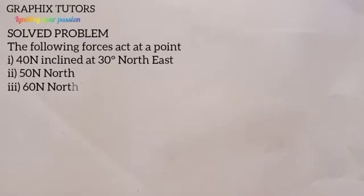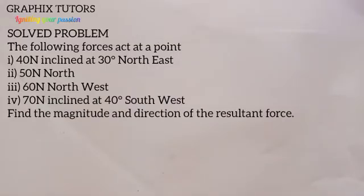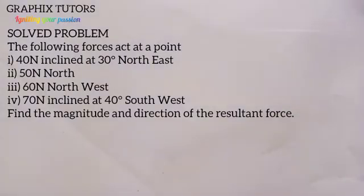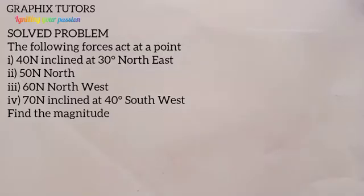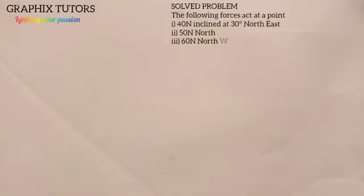Good everyone, my name is Graphics. Today we want to solve this problem in mechanical science. The problem goes like this: the following forces act at a point. The first force is 40 Newton inclined at 30 degrees north east, the second is 50 Newton north, the third is 60 Newton northwest, and the fourth is 70 Newton inclined at 40 degrees southwest. We are asked to find the magnitude and direction of the resultant force.